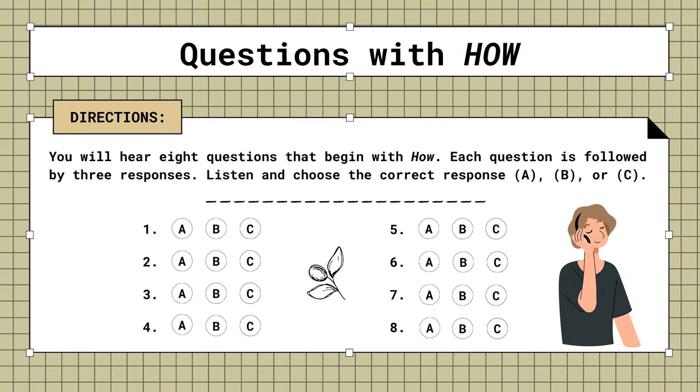Mini-test. Questions with how. You will hear eight questions that begin with how. Each question is followed by three responses. Listen and choose the correct response. A, B, or C.